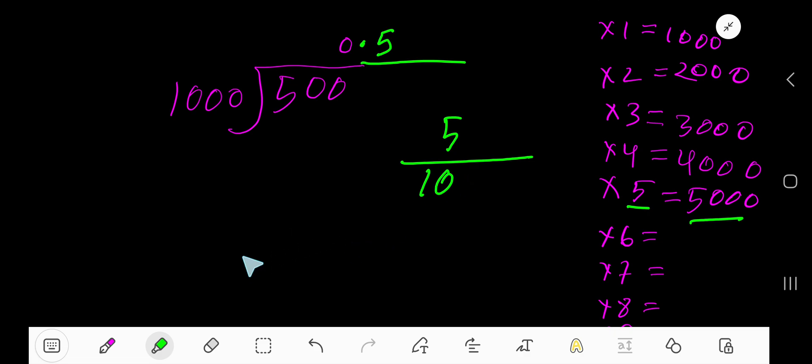Now divide this 5 by 5, you will get 1. Divide this 10 by 5, you will get 2. That is 1/2. Now divide this 1 by 2. 2 goes into 1 zero times. 0 times 2 is 0. If you subtract, 1.